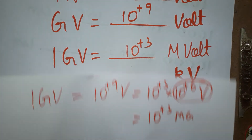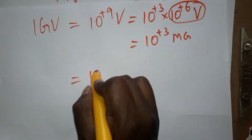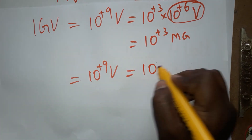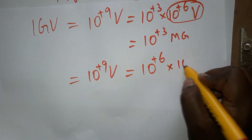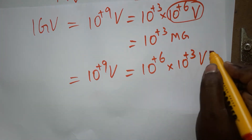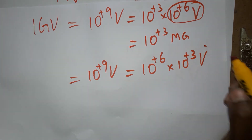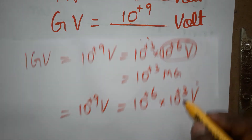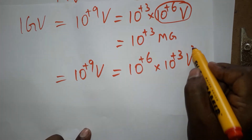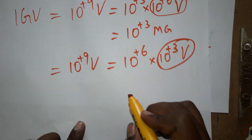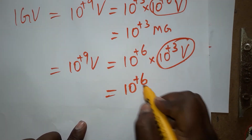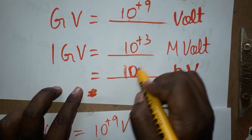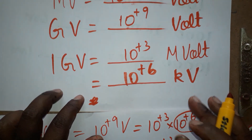1 GV is equal to KV. GV is 10 power plus 9 V, which we can write as 10 power plus 6 into 10 power plus 3 V. We can call 10 power plus 3 as KV, so it is 10 power plus 6 KV. Therefore 1 GV is 10 power plus 6 KV.